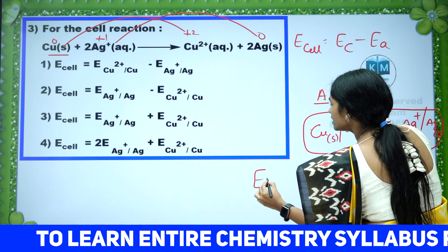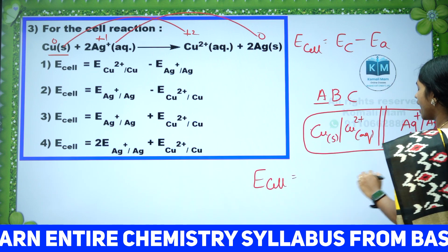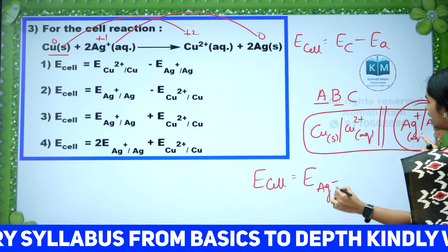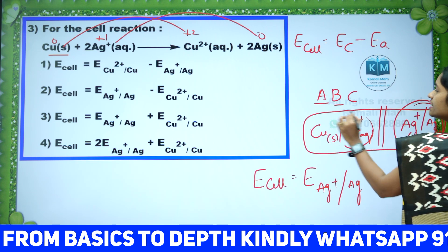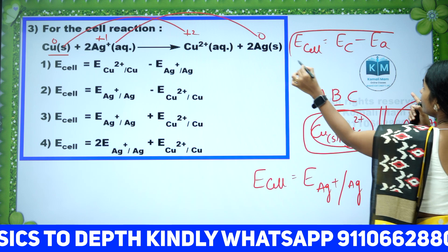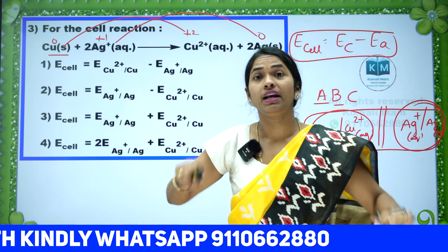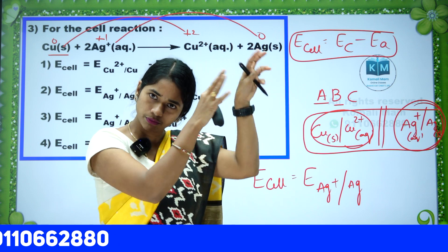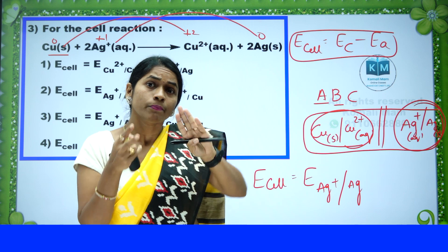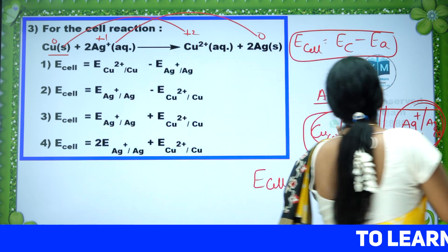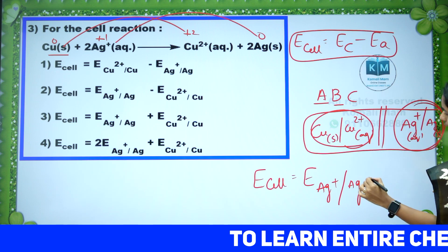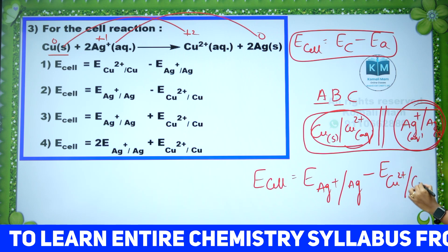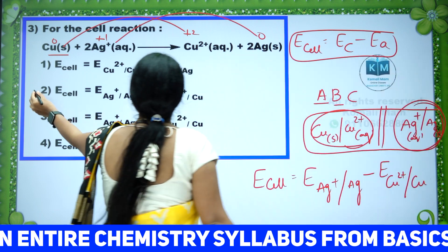What is our formula? E_cell = E_cathode − E_anode. The cathode here is Ag⁺/Ag. Both must be taken in SRP (reduction) form only. For the anode, since we substitute it with a minus sign in SRP form, we write E_reverse for Cu²⁺/Cu. So the correct option is option number 2. I have explained two different models here. This is the NCERT explanation from which the question is framed.